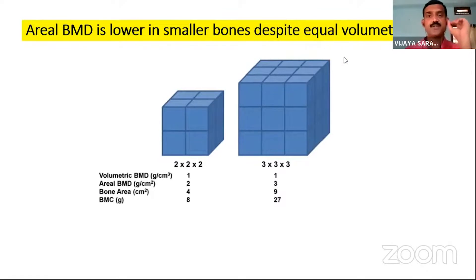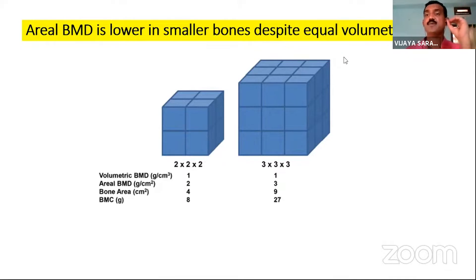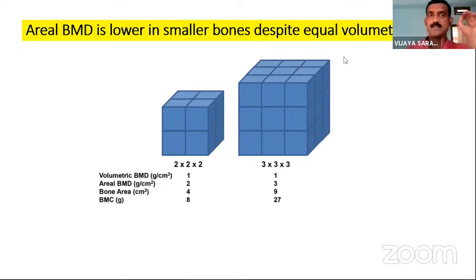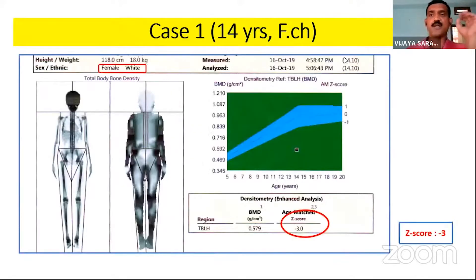An important point when dealing with pediatric BMD assessment: short bones will have an areal BMD that is lower than bigger bones, even if they have the same volumetric BMD. As depicted in the picture, if you have two cubes of equal volumetric BMD but measure by areal BMD technique like DEXA, the smaller cube gives a smaller value. This means areal BMD underestimates BMD in smaller bones, whether due to short height or narrow vertebrae.